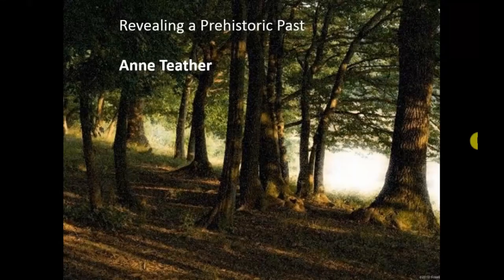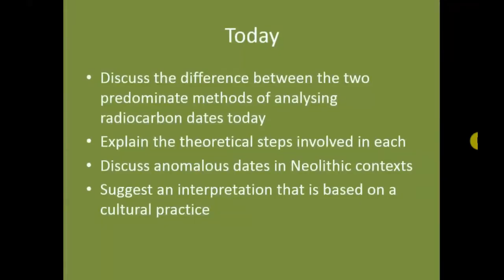Thank you everyone for coming. This is a piece of work that I kind of did by accident. I was looking at radiocarbon dates in the early Neolithic, and we've got two main ways of looking at radiocarbon dates at the moment which I'll go into: summed probability and Bayesian analysis. I'm going to talk about those methods, the theoretical steps involved in each, and discuss the anomalous dates in the illicit context that I've come across.